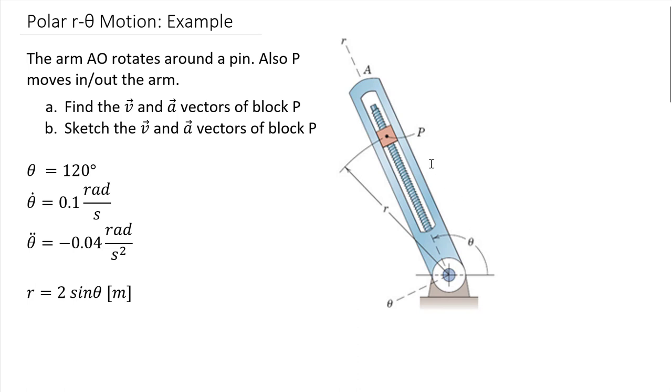So that's the general idea here. What we want to find is an equation, a relationship to find the velocity and acceleration vectors of this block, this block right here, block P. Now we're going to find it, we're going to sketch those vectors so we can fully show that we understand what's going on.